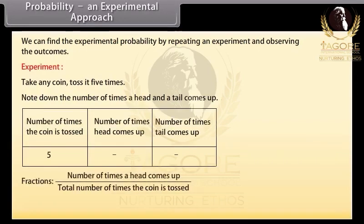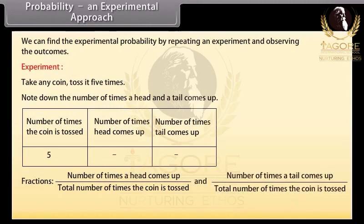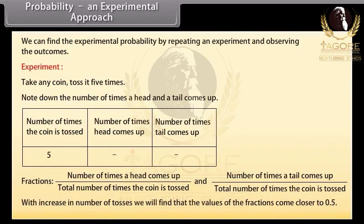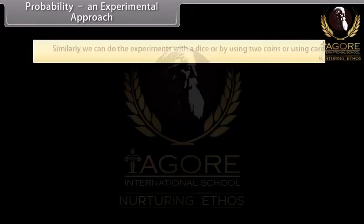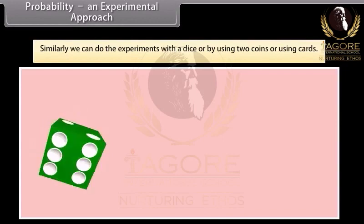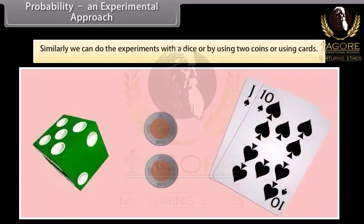Note down the number of times a head and a tail come up and fill the given table. Then write the fractions. First one is number of times a head comes up upon total number of times the coin is tossed. And the second one is number of times a tail comes up upon total number of times the coin is tossed. As we increase the number of tosses, we will find that the values of the fractions come closer to 0.5. Similarly, we can do the experiments with the dice or by using two coins or using cards.